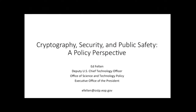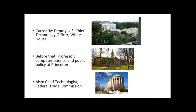Let me start by talking a little about my background and the position I'm in right now to give you some context. My current position is Deputy U.S. Chief Technology Officer at the White House. Our job is to be the primary advisors to the President and his senior advisors on issues of technology policy, really across the whole spectrum of technology policy, including issues of particular interest to this community.